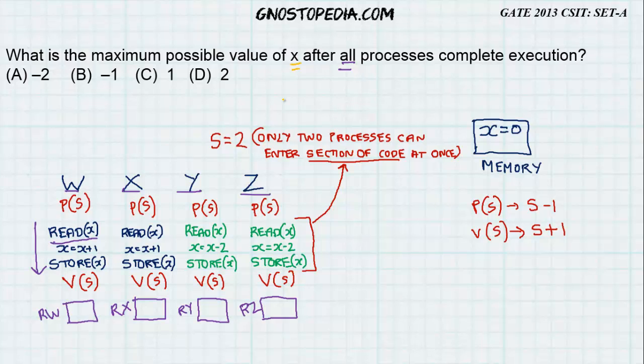Now, as I mentioned earlier, since the value of capital S is 2, only two processes can enter the section of code at the same time. In the first part, I will take X and Y together to enter the section at the same time. So, Y starts by doing this code and S is reduced by 1 because P is S minus 1. Similarly, X invokes the wait function and it reduces the value by 1 and it is now 0.